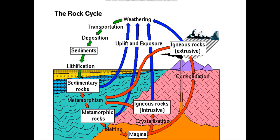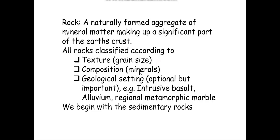Later on, it lithifies. You can see here the land — the first layer, another layer, and another layer on top, so they lithify under the overburden. Rock is a naturally formed aggregate of mineral matter making up a significant part of the earth's crust. All rocks are classified according to texture, grain size, and composition — the minerals from which they are composed.